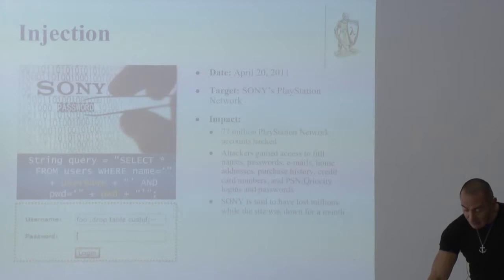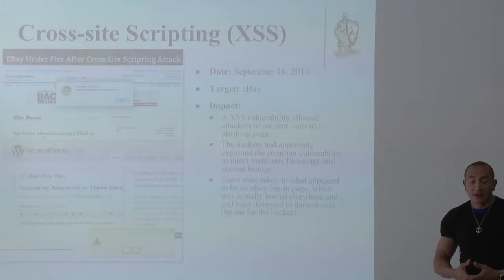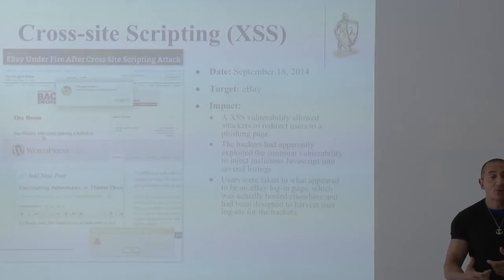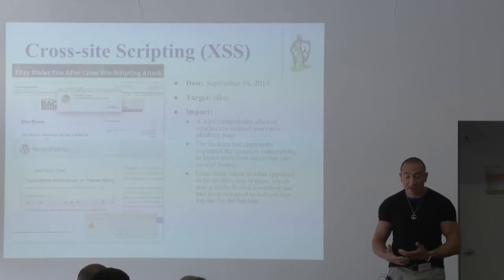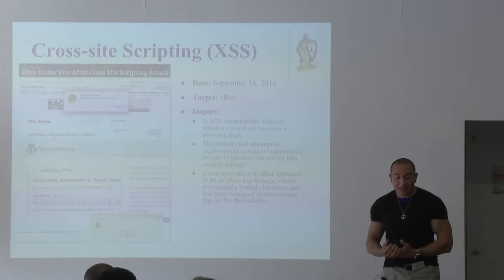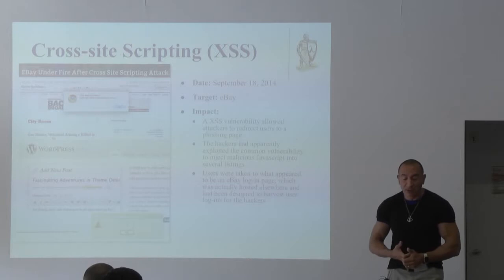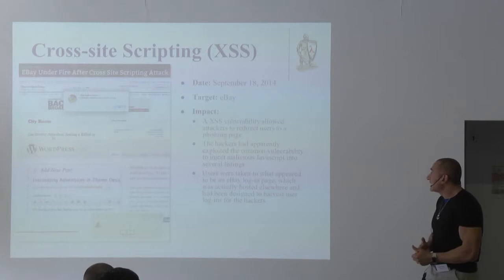Another very common vulnerability is cross-site scripting, which happens when an attacker can inject JavaScript code wherever normal text is expected, because JavaScript code is indeed text. Instead of being rendered by the browser, it gets executed. One of the most famous victims is eBay — these attacks are so common it's almost impossible to count all affected companies. It was a major vulnerability.